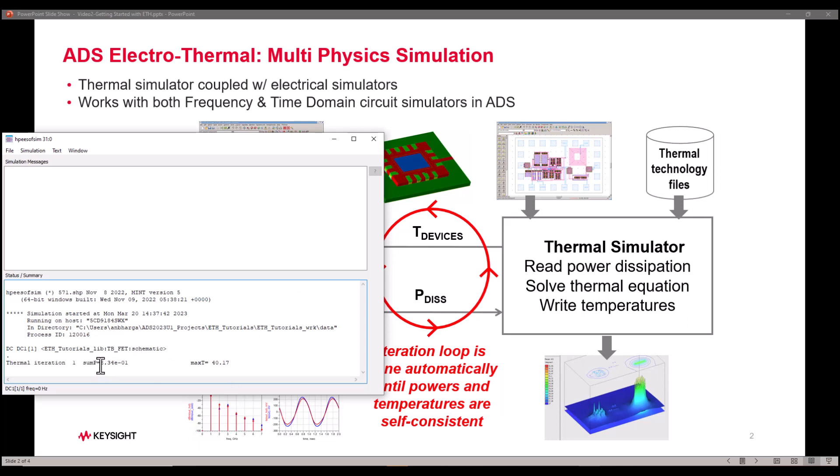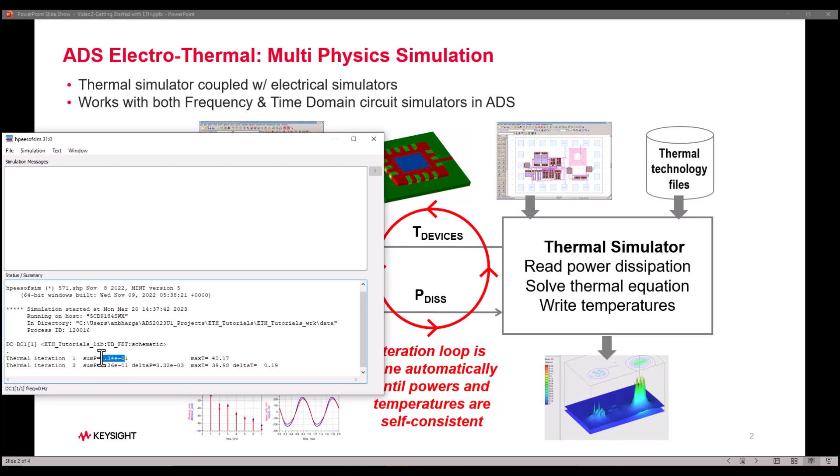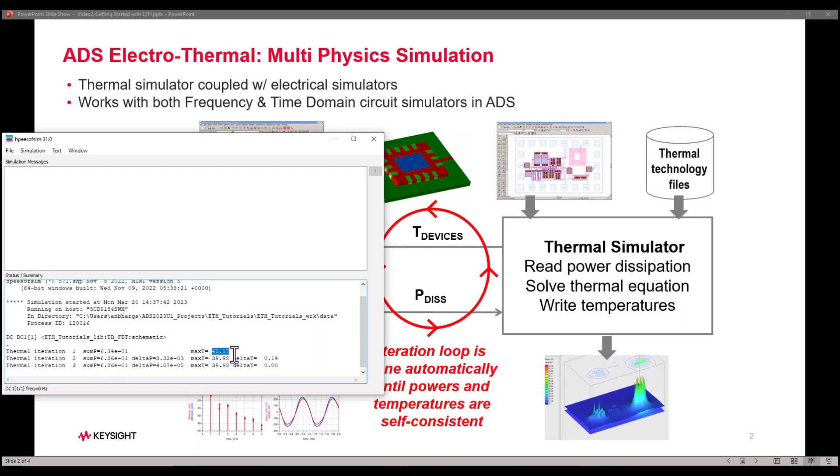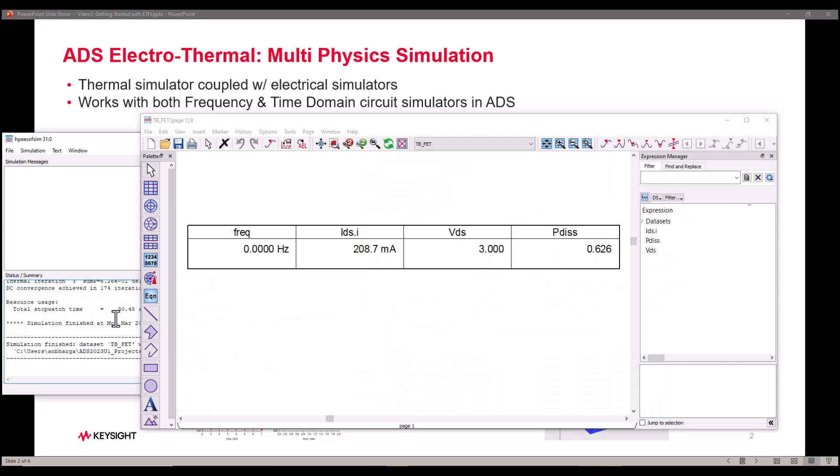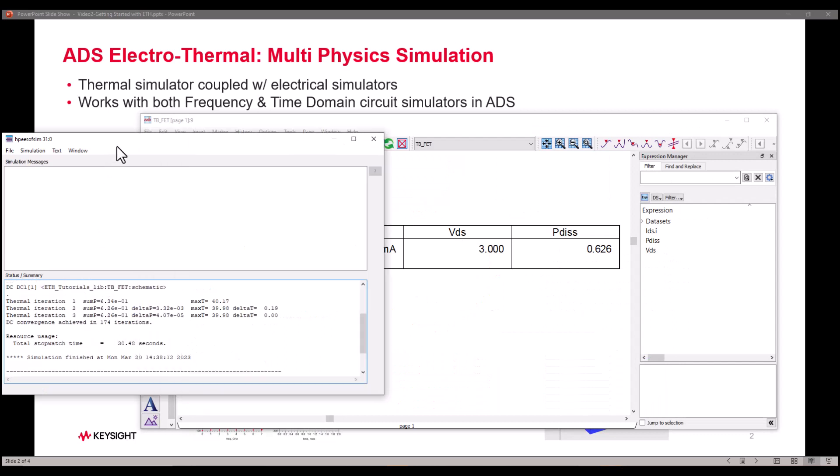So currently you can see it has performed the first calculation, calculated the temperature, passed this information back to circuit simulation and this loop went on till we achieve the convergence and the delta temperature difference or delta power difference becomes zero.